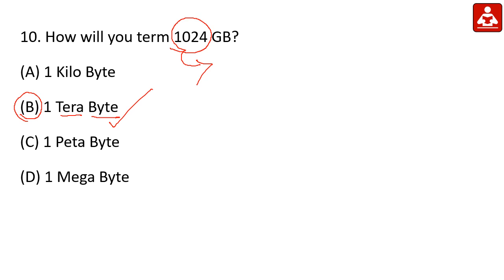1024 GB is 1 TB. The storage hierarchy is: Kilobyte, Megabyte, Gigabyte, Terabyte. Next question.